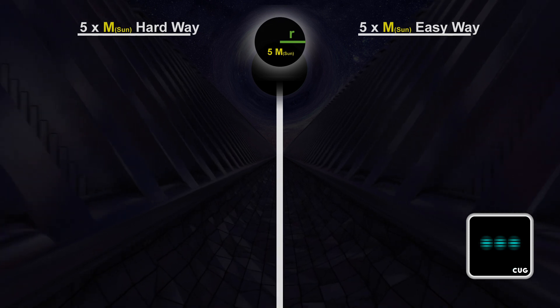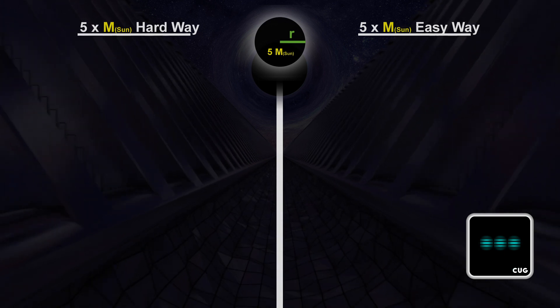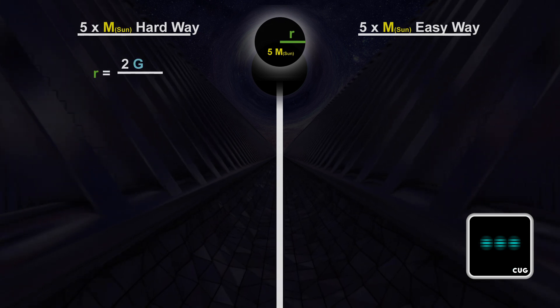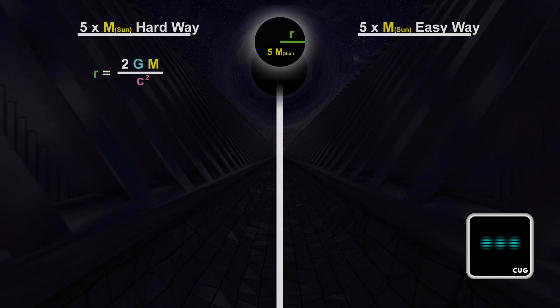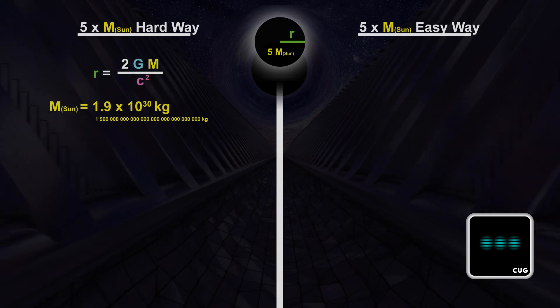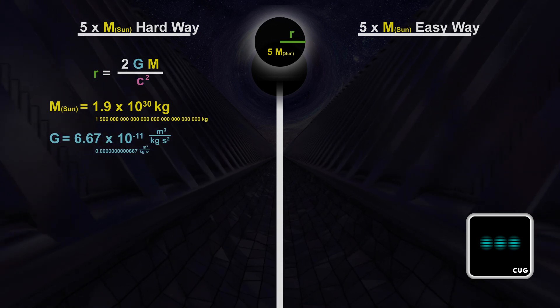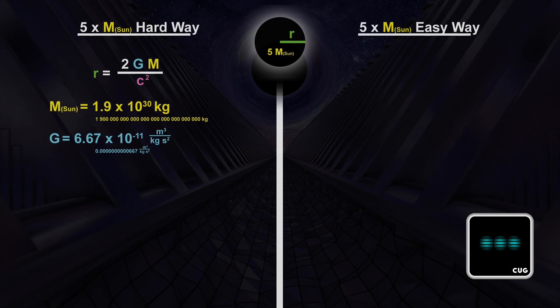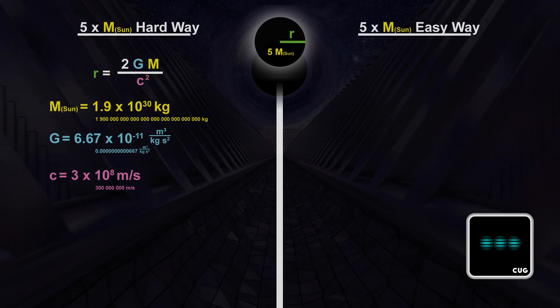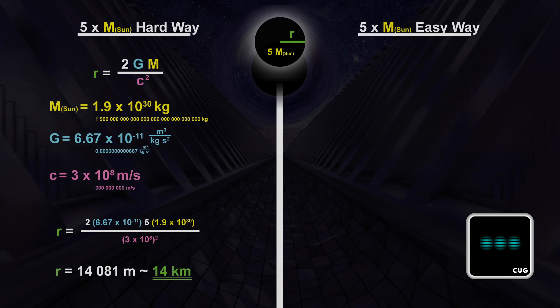It should be noted that we do not speak about rotating black holes. Then things become even more complicated. So, the radius of a black hole is calculated with 2 times the gravitational constant times the mass divided by the square of the speed of light. The mass of the sun is 1.9 times 10 to the power of 30 kilograms. The gravitational constant is 6.67 times 10 to the power of minus 11 cubic meters per kilogram second square. The speed of light is 3 times 10 to the power of 8 meters per second. If we calculate all this we come to a radius of the black hole of 14 kilometers.